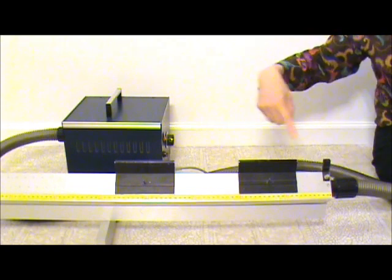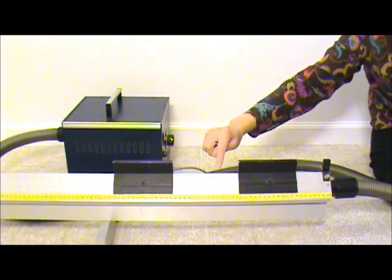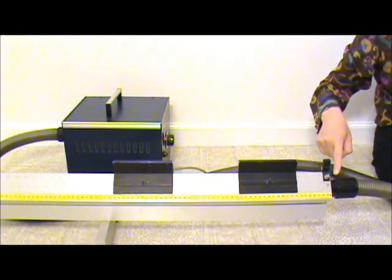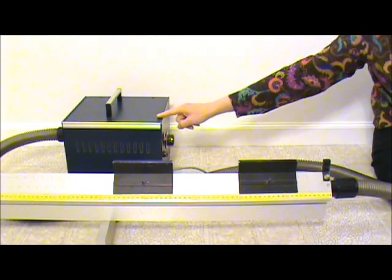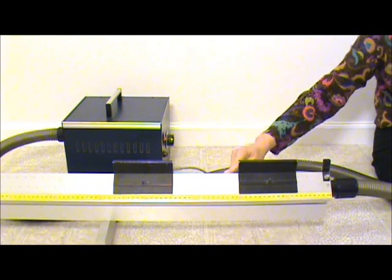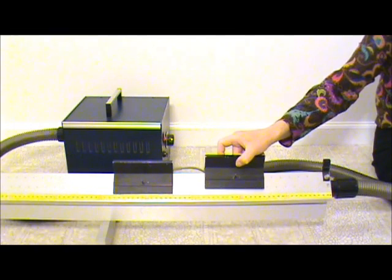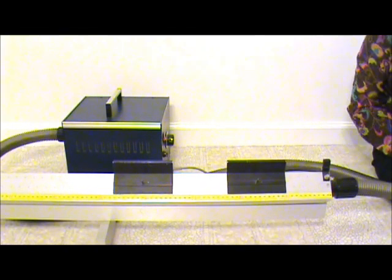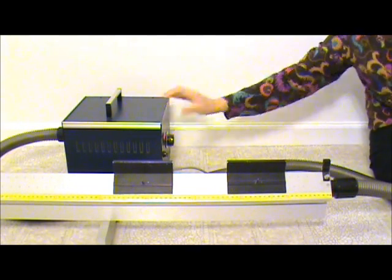Here I have an air track. It's a long straight metal beam with lots of small holes on its surface. A pump can pump air into the beam so air can blow out of these holes. When the pump is on, these gliders do not touch the beam surface. Instead, they ride on a layer of air with very low friction. This is kind of like an air hockey puck on an air hockey table. Let me turn it up to show you.